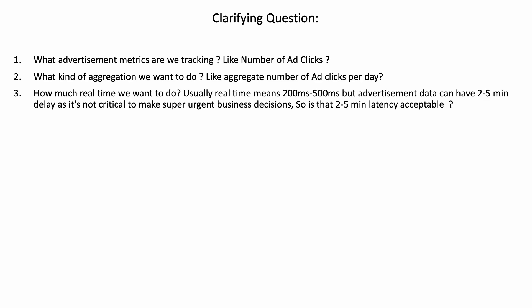The question is very vague, so let's ask some clarifying questions to remove ambiguity. What advertisement metrics are we tracking, like number of ad clicks? What kind of aggregation do we want, like aggregate number of ad clicks per day? How real-time do we want — usually real-time means 200ms to 500ms — but advertisement data can have a 2-5 minute delay as it's not critical to make super urgent business decisions. So is 2-5 minute latency acceptable?